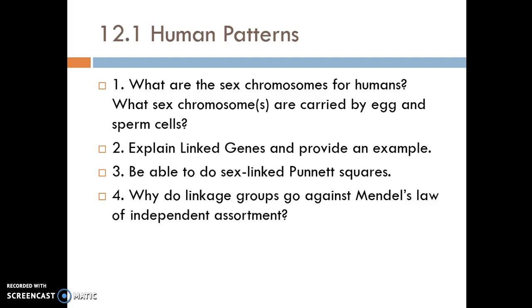An example could be sex-linked genes — those genes are linked to the X chromosome and are attached to that X chromosome. Another example would be having gene A at the top of a chromosome and genes B and C at the bottom of the chromosome. B and C are likely to stay together or be linked, and A will often get separated through crossing over.